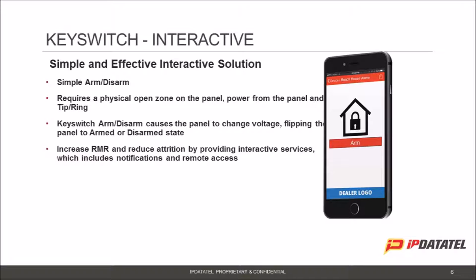KeySwitch is basically just an open zone on the panel, and with a voltage change, it allows the system to alternate between an armed and disarmed state. It helps to increase your RMR because you are providing interactive services, and it also helps to reduce attrition. When a customer has these interactive services, they're much more likely to stay with you and also add more services in the future.